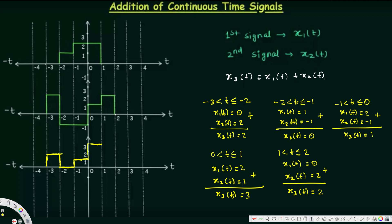From 1 to 2 we are going to have 2. And that's how we add continuous time signals. It doesn't matter how many signals you have — you can always add them like this. I hope this helps, thanks for watching.